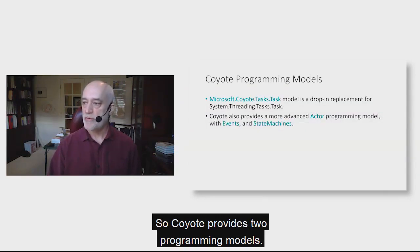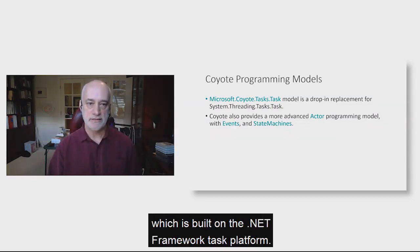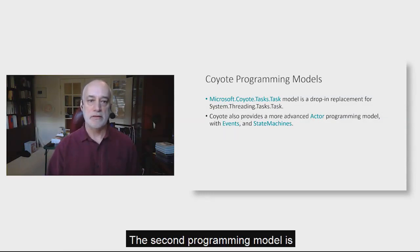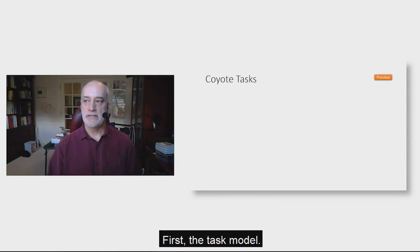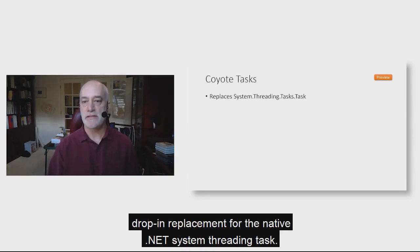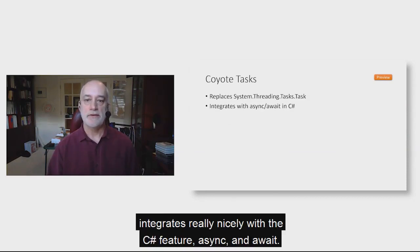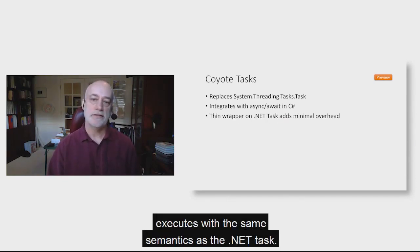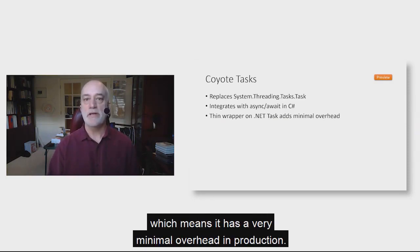Coyote provides two programming models. One is based on the task programming model, which is built on the .NET Framework task platform. The second is a more advanced actor programming model using events and state machines. The task model offers a task type that serves as a drop-in replacement for the native .NET System.Threading.Task. In production, a Coyote task executes with the same semantics as the .NET task — it's a very thin wrapper around the native task with minimal overhead.